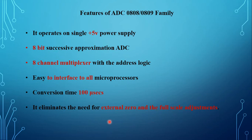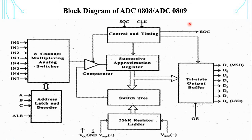The ADC 0808 and ADC 0809 are monolithic devices with an 8-bit analog to digital converter and an 8-channel multiplexer. These devices are designed to operate from common microprocessor control buses with tri-state output latches driving the data bus. The 8-bit data converter uses successive approximation as the conversion technique. The ADC 0808 or 0809 offer high speed, high accuracy, minimum power consumption, and repeatability.